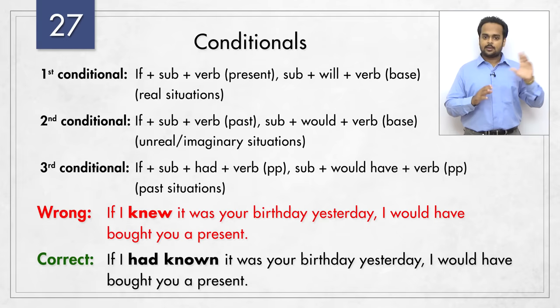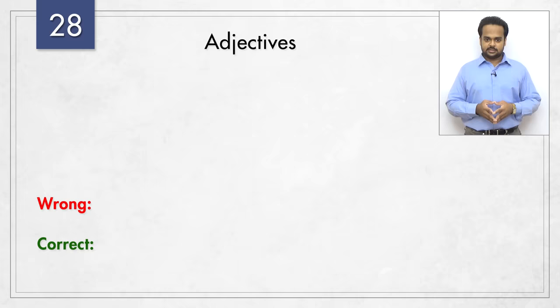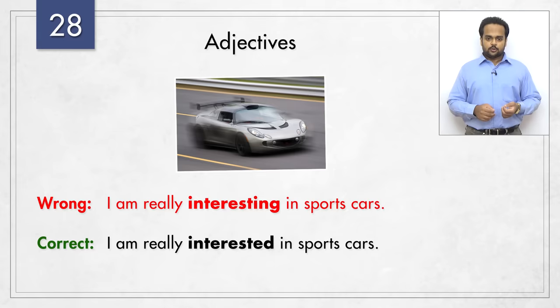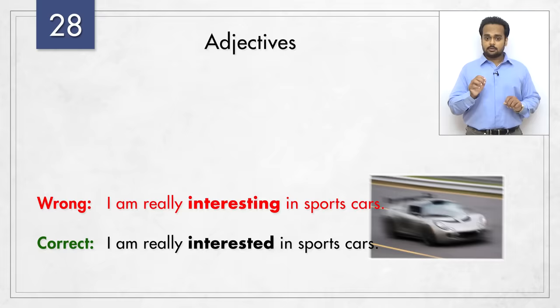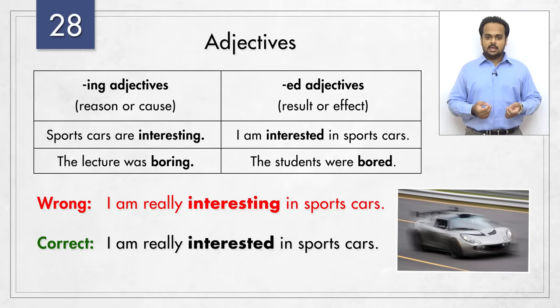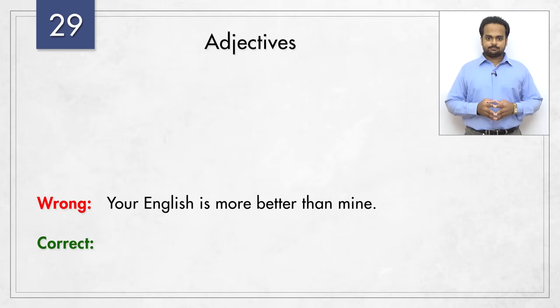Our next topic is errors in adjectives. Here's the common mistake – 'I am really interesting in sports cars.' You should say 'I am really interested in sports cars.' When deciding between the -ed and -ing forms of an adjective, remember: the -ing adjective shows the reason or cause, and the -ed adjective shows the result or the effect. So sports cars are interesting and I am interested in sports cars. In the same way, the lecture was boring, so the students were bored.